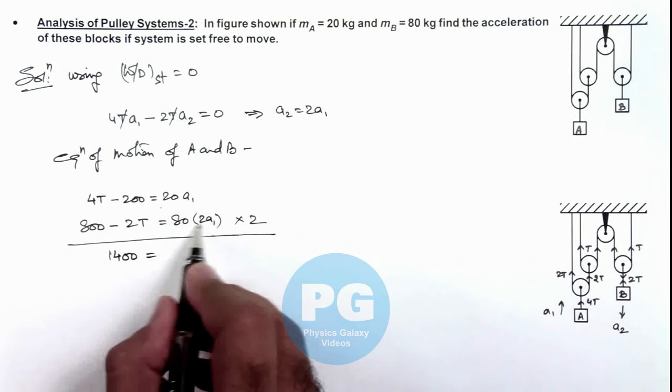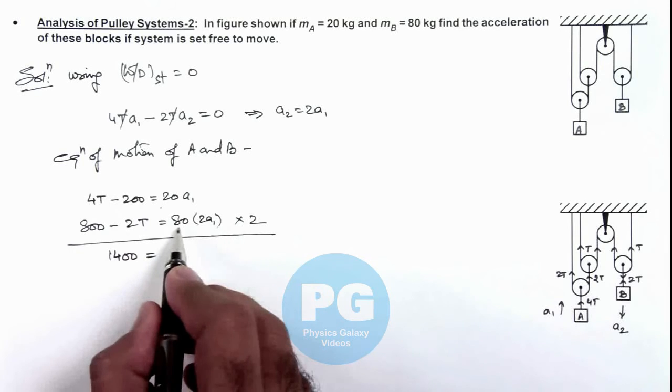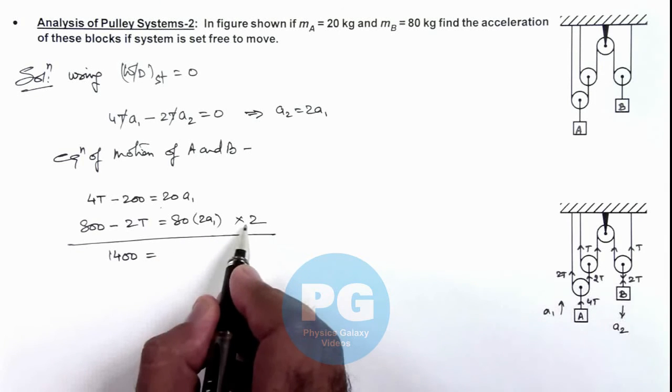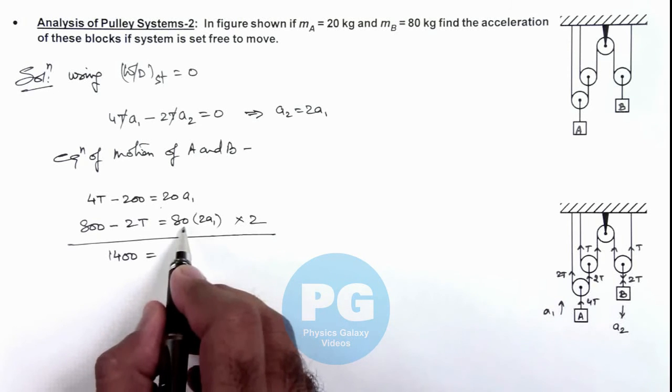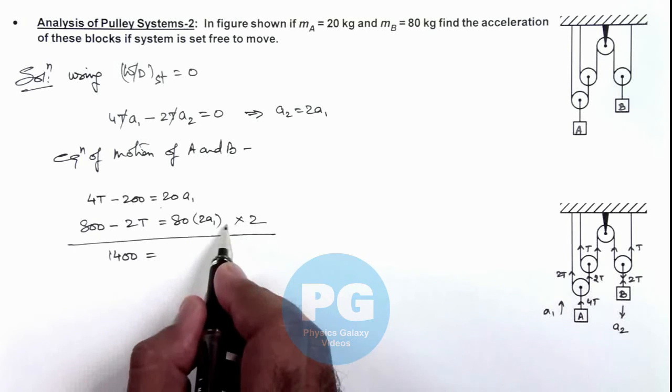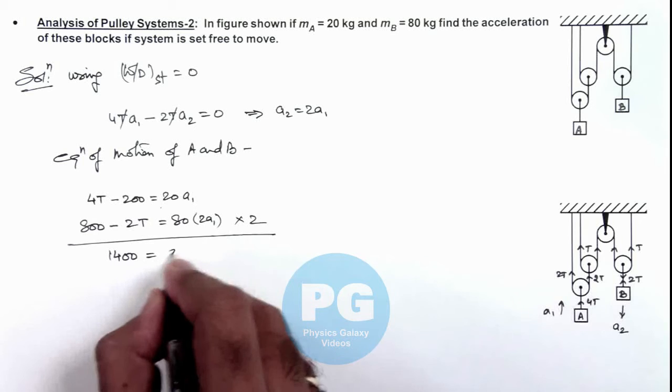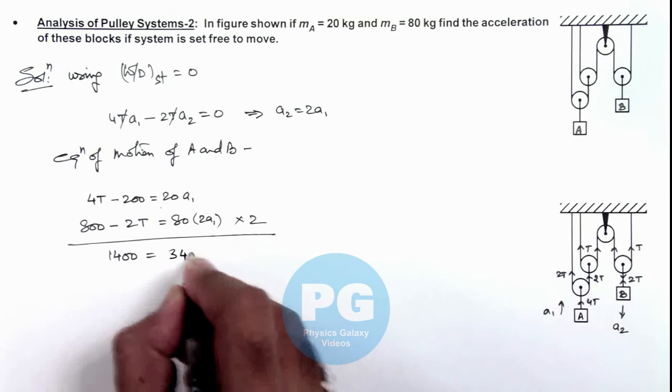This will be 80 multiplied by 2 is 160 multiplied by 2, here is 320. So the value after adding up the acceleration will be 340 a₁.